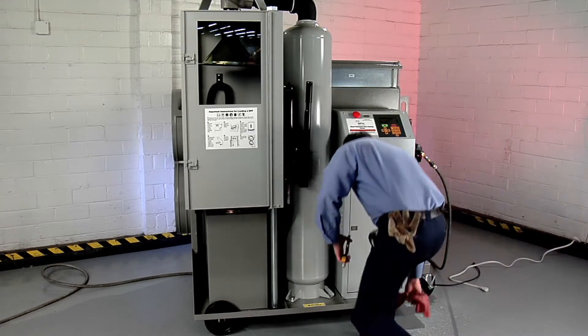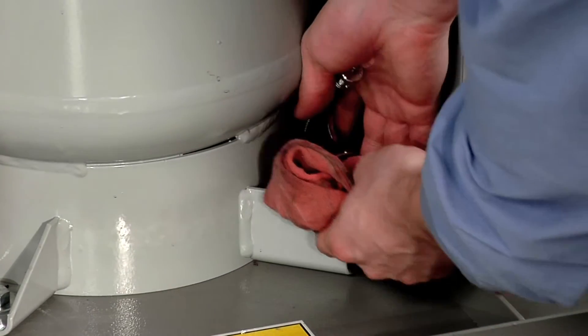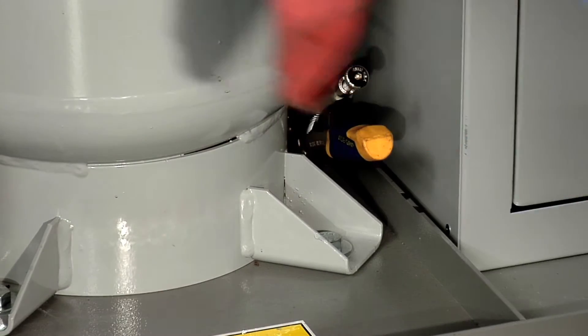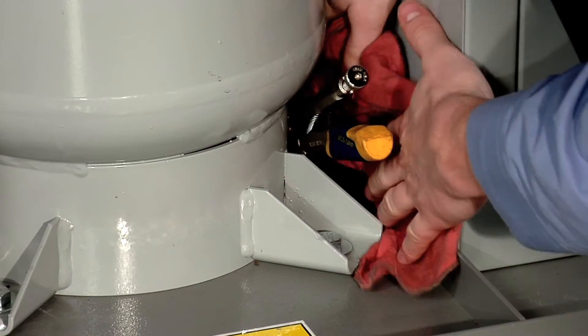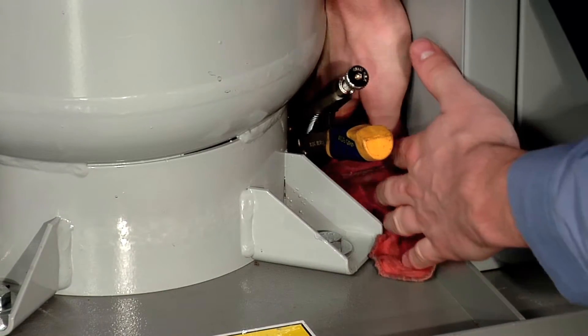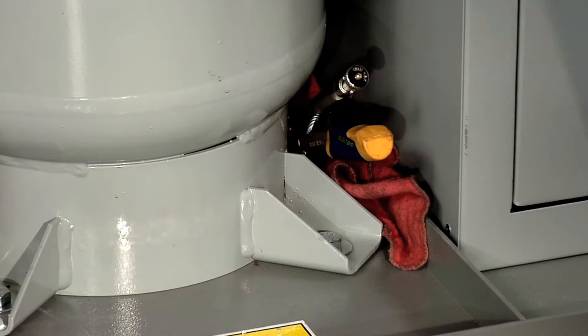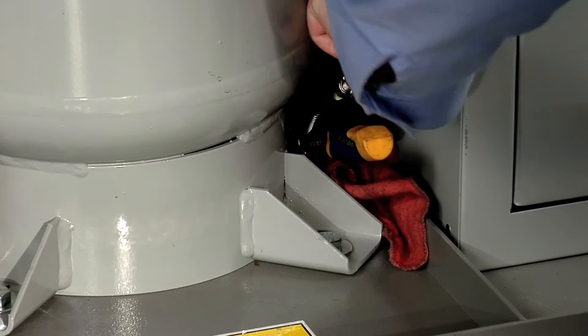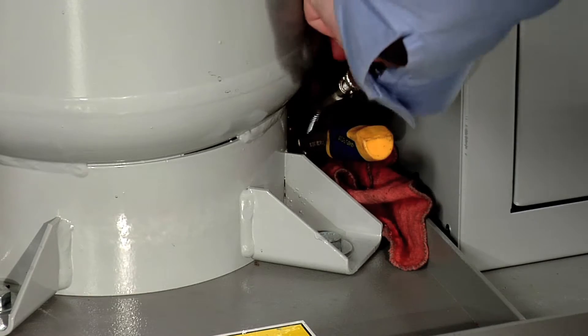Place a shop towel or shallow pan under the air tanks drain plug. While holding the pipe coupling, remove the drain plug and let the water drain out. Install and tighten the drain plug into the air tank pipe fitting and dispose of the water.